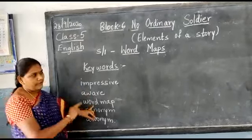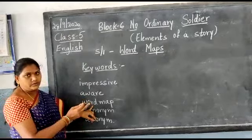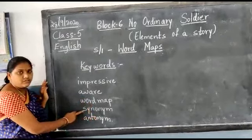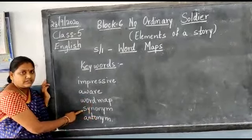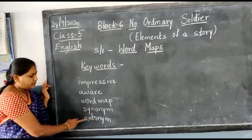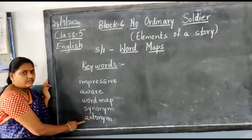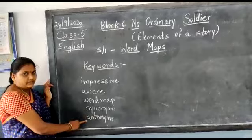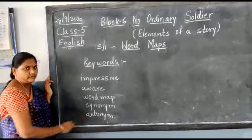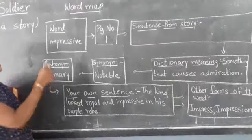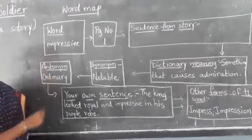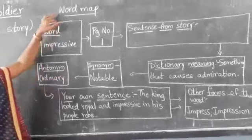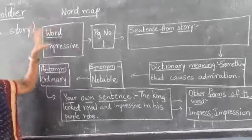Coming to word map — I will show you how to use a word map. Synonym means similar meaning. Antonym means opposites. This is the word map, children. In keywords, we have seen the word 'word map,' right? This is the word map — how to write a word map for one word.